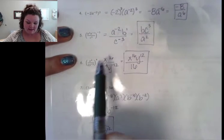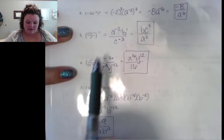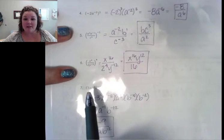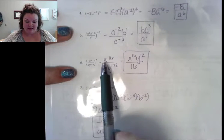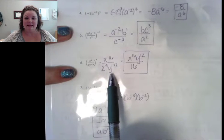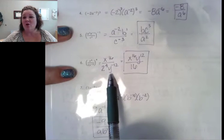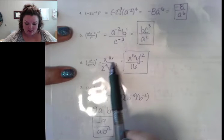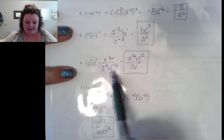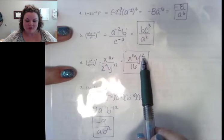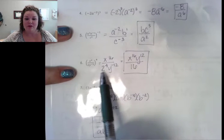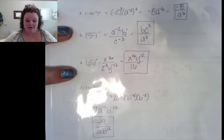Number 6, same idea — distribute the 4 to everything's exponent. When I distribute by multiplying exponents, that gives me x to the 16th, 2 to the 4th, and y to the negative 12. The only thing I need to move is that y to the negative 12, so my y base moves up to give me a positive 12. Then multiply out 2 to the 4th, which equals 16, in the denominator.